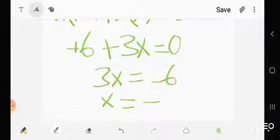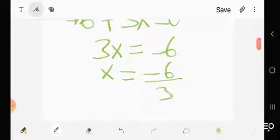So X is equal to negative six over three, which is equal to negative two.